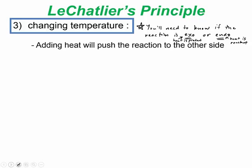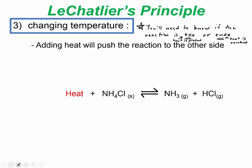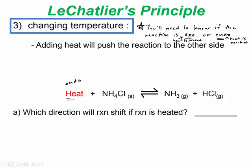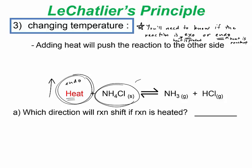Adding heat will push the reaction to the other side. Here's a decomposition reaction that requires heat, so it's endothermic. If this reaction is heated, you can think of heat as an actual reactant — the system doesn't like all that extra heat, so it wants to remove it by reacting and shifting right, consuming the added heat.